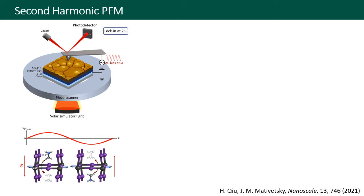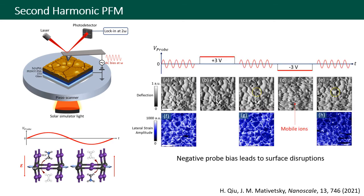One of the pieces of evidence in support of a cation motion mechanism comes from applying a DC bias in between the PFM measurements. When we apply a positive DC bias to the probe in between PFM measurements, there is a minor effect on the PFM imaging contrast.